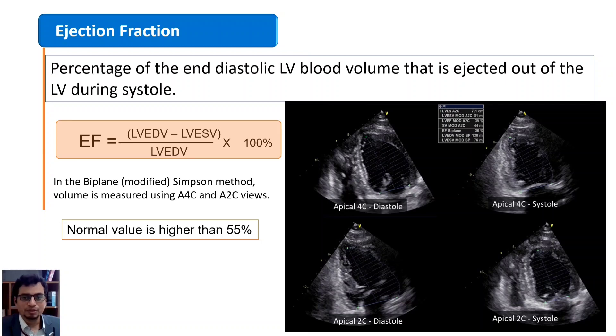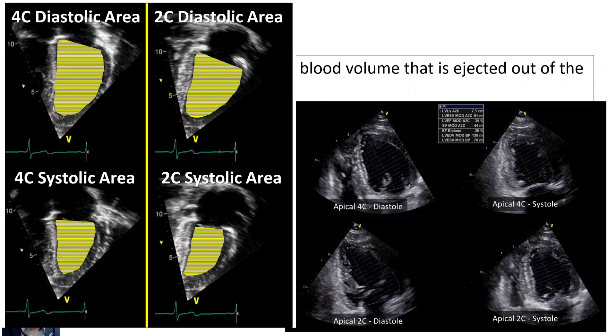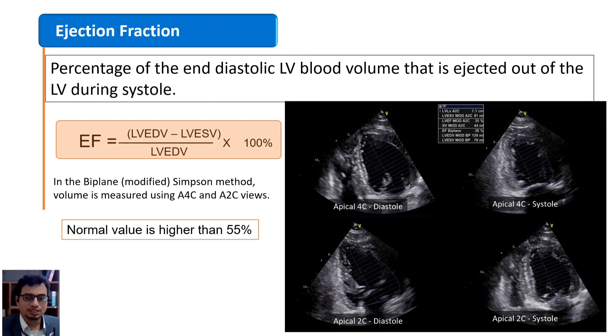These volumes can be measured with better accuracy applying the Simpson method in apical 4 chamber and apical 2 chamber views. Normal LV ejection fraction is higher than 55%.